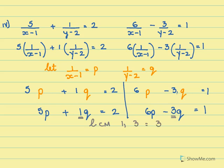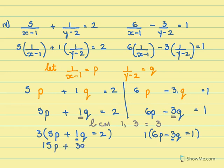So my first equation, 5p plus 1q is equal to 2, I have to multiply this by 3 because I need to make the 1 as 3. I am making both the coefficients as 3, and the next one is 6p minus 3q equals to 1. This I multiply by 1 because the coefficient is already 3. So open the bracket, 15p plus 3q equals to 2, and here is 6p minus 3q equals to 1.